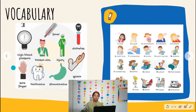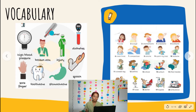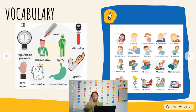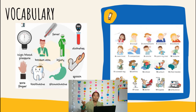We're going to repeat the first ones: high blood pressure, broken arm, fever, injury, diabetes, sore finger, toothache, stomachache, and sprain. Remember that you need to repeat so you can practice this vocabulary. It will help you with your pronunciation and help you remember the vocabulary.